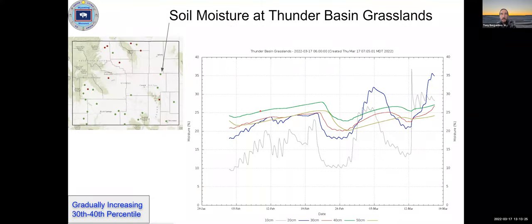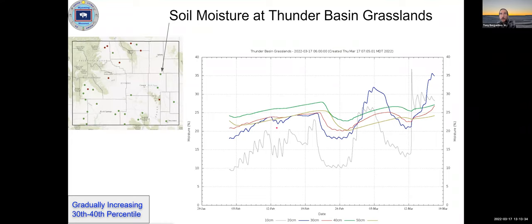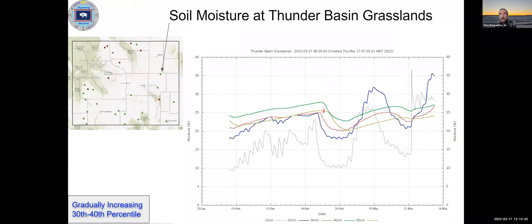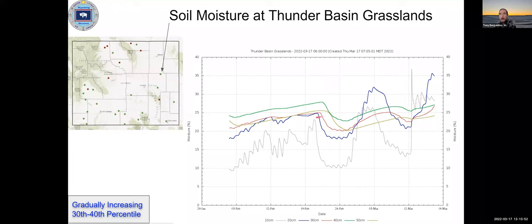Soil moisture at the Thunder Basin grasslands at the Converse-Campbell border shows moisture gradually coming up, though we did have two dips related to those cold temperature spells — cold weather causes a reaction with moisture in the ground that temporarily lowers readings. But overall we are coming up a bit, with some melt from recent storms going into the soil. That's a good sign.